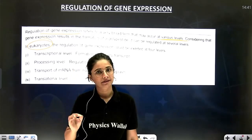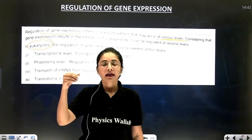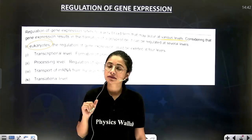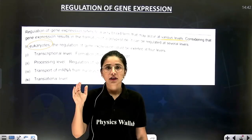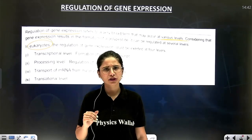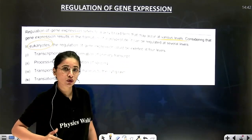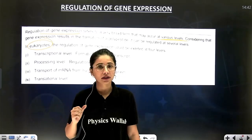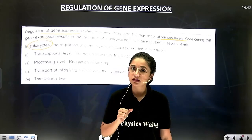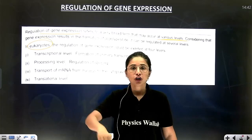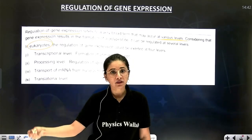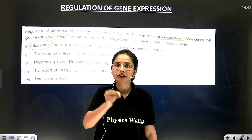Number one is at the transcription level — that means when you are making RNA from DNA, at that time the process can be made to halt. If DNA is not converting itself into RNA, then protein synthesis will not take place. Second, suppose transcription happened and RNA is obtained. But in case of eukaryotes, the RNA soon obtained after transcription is heterogeneous. If we don't let that heterogeneous RNA convert into proper RNA, again protein synthesis won't take place. So the second level of gene expression regulation is to stop the process of splicing.